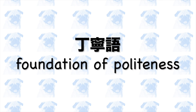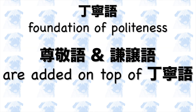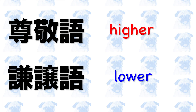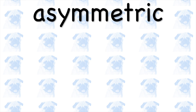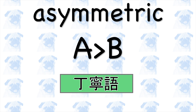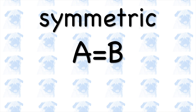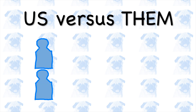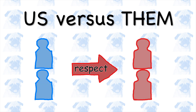Here's a recap. 1. Teineigo is the default polite language; if the use of sonkeigo and kenjougo is expected, then teineigo is also expected. 2. Sonkeigo implies a higher social status, whereas kenjougo implies a lower social status. 3. In an asymmetric social relationship where A has a higher status than B, A does not need to use keigo towards B, but B should use teineigo at all times, sonkeigo towards A, and kenjougo reflexively. 4. In a symmetric relationship where A and B have equal status, the use of sonkeigo is mutual, and kenjougo should be used reflexively by both. 5. In a situation with a divide between the 'us' and 'them' sides, sonkeigo should be used towards people on the 'them' side, and kenjougo towards people on the 'us' side in the presence of someone from the 'them' side.